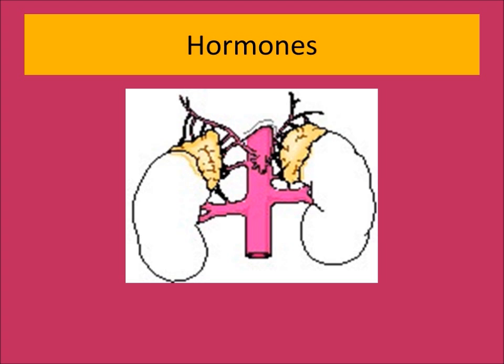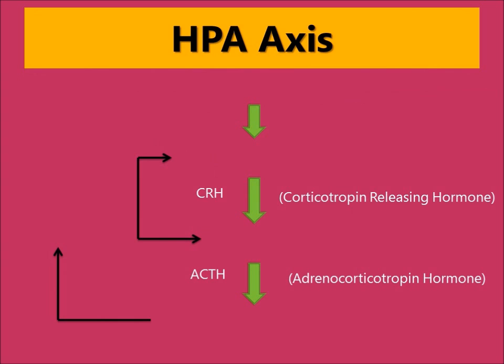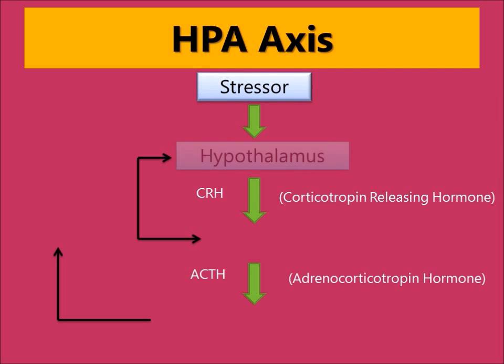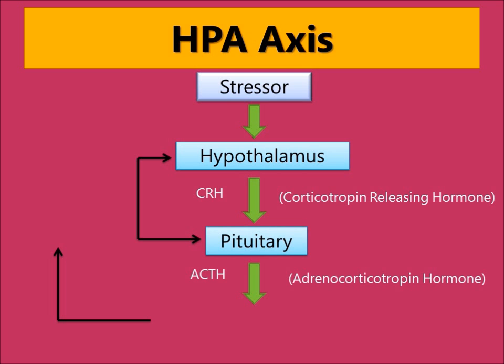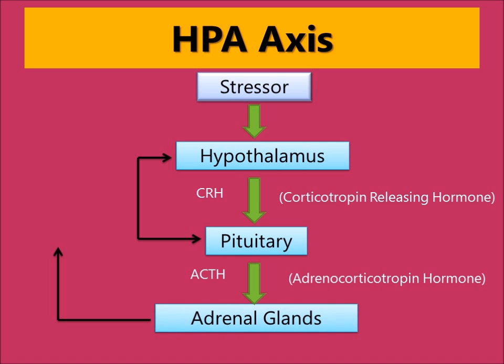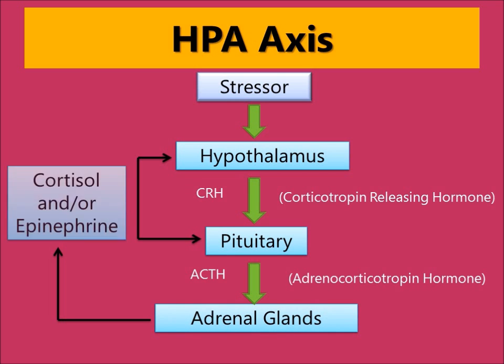These stress hormones prepare your body for a challenge in a number of ways. Here is a more detailed look at what happens to your brain and hormones during stress. The hypothalamus acts like a large funnel — all types of stress, mental, emotional, and physical, stimulate the hypothalamus. From there, hormonal messages are sent to the pituitary gland in the brain and then to the adrenal glands, where epinephrine, norepinephrine, and cortisol are released. That's the stress response in a nutshell.